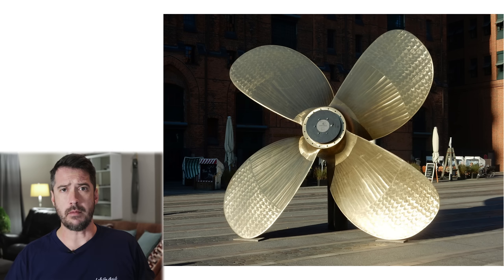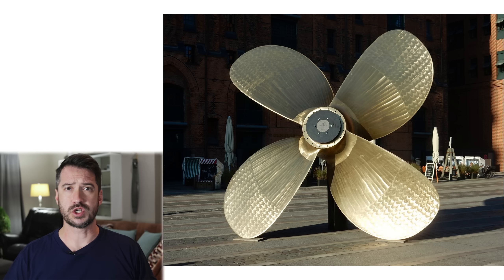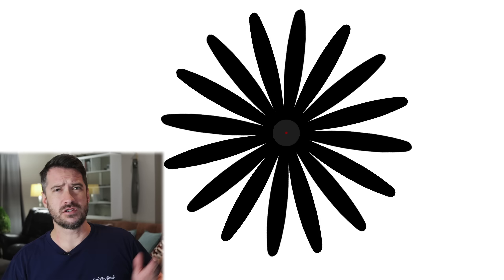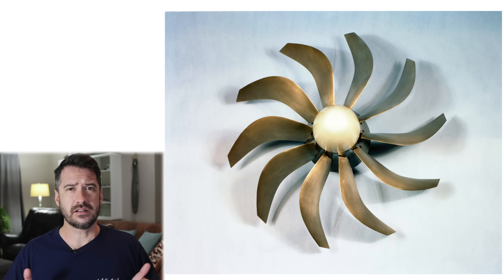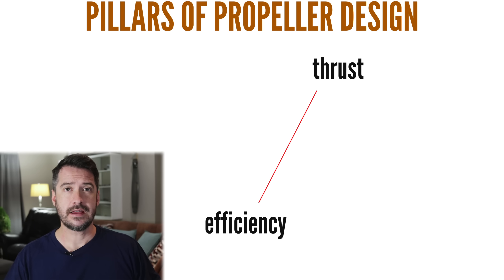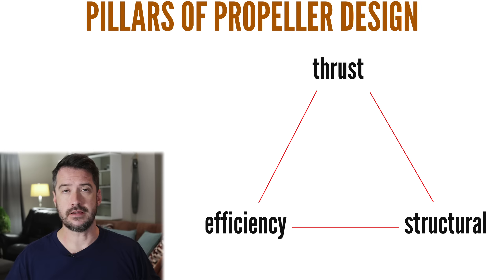But why is this? Why doesn't one see a lot of short, stubby airplane propellers or propellers with extremely long blades or dozens of blades or other weird-looking propeller designs? The number of blades, blade length, blade cord, pitch and shape in general are trade-offs between thrust, aerodynamic efficiency and structural integrity.